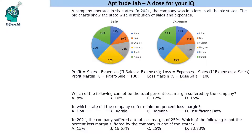Hello everyone, welcome to Aptitude Jab. This is a set based on a pie chart. A company operates in six states; in 2021 the company was in loss in all six states, and the pie chart shows the state-wise distribution of sales and expenses. Profit is sales minus expenses when sales exceed expenses, and loss is expenses minus sales when expenses exceed sales. Profit margin is profit divided by sales, and loss margin is loss divided by sales.